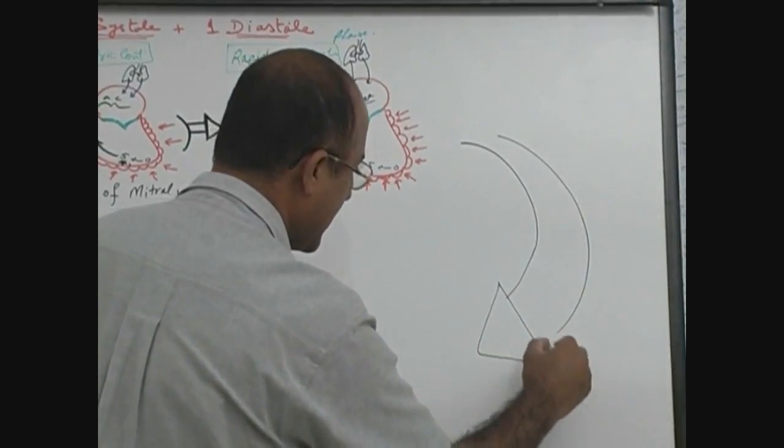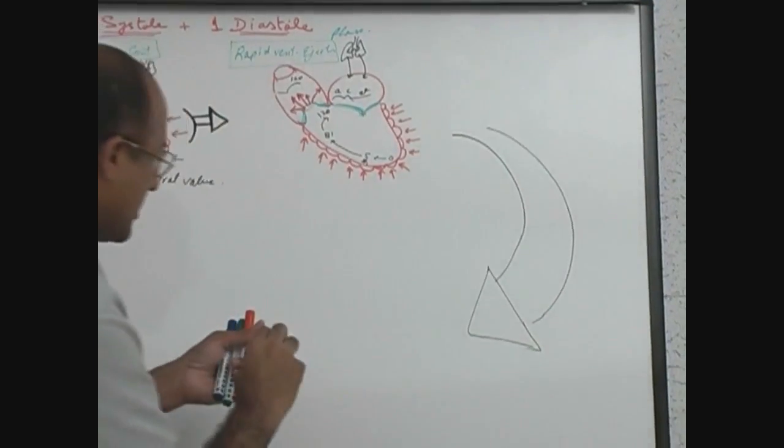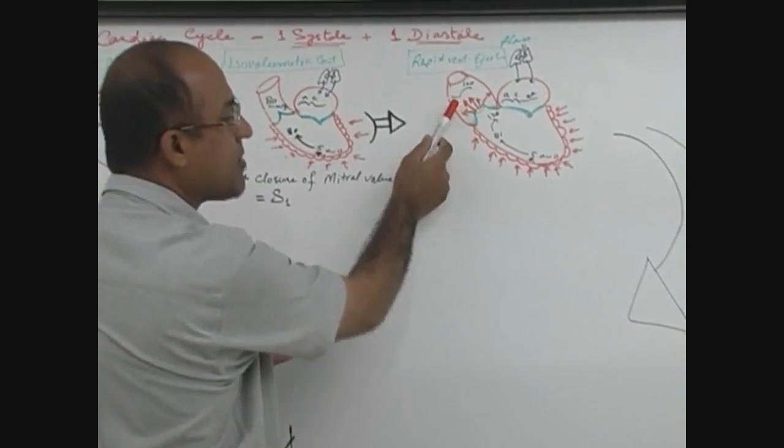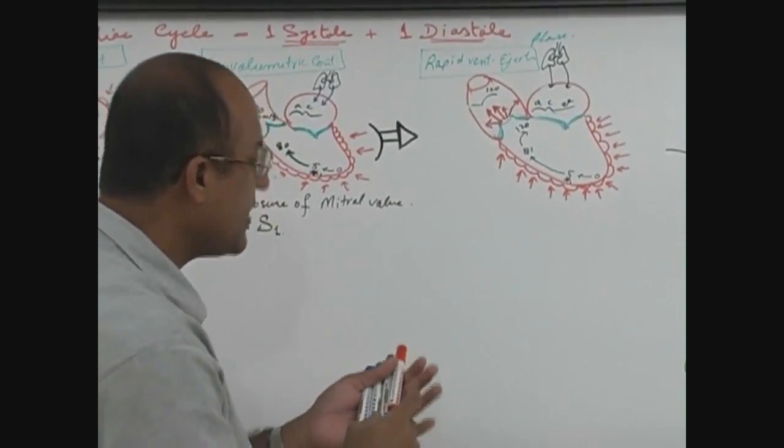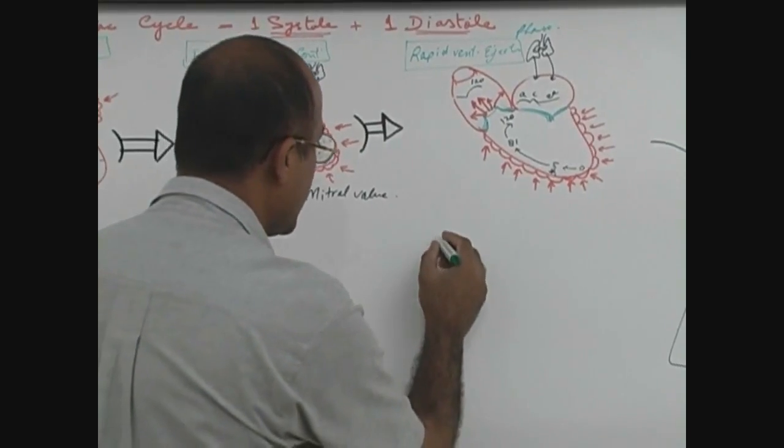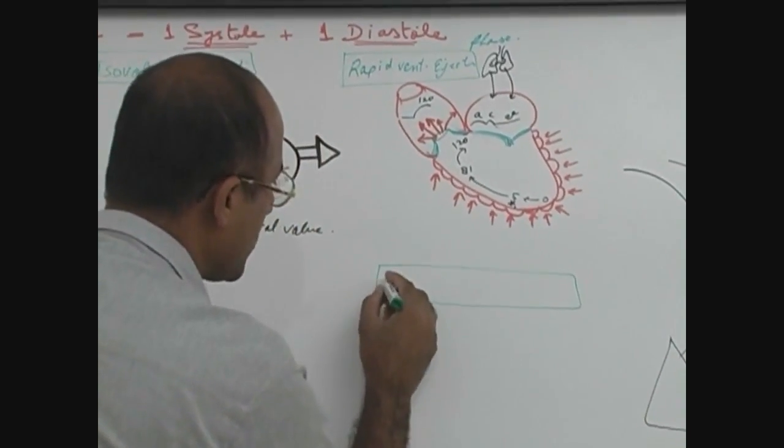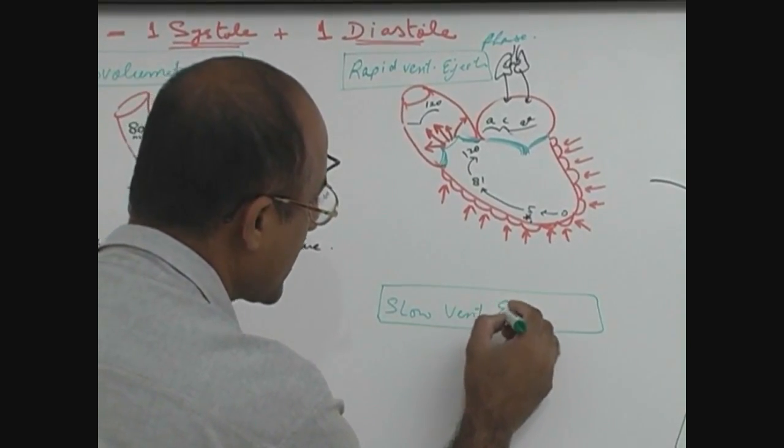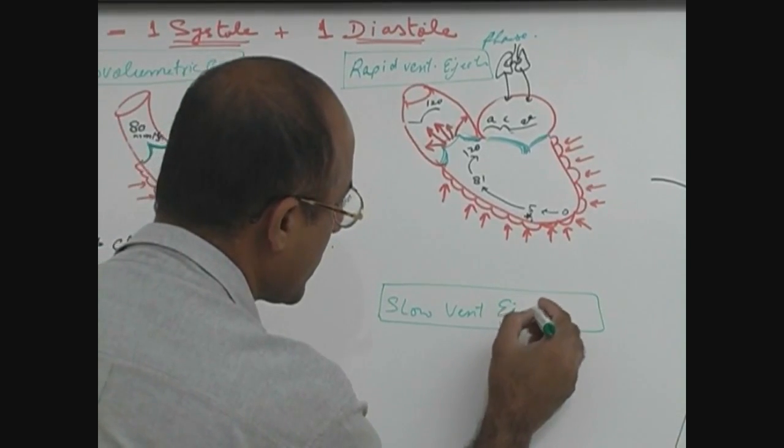But before it starts relaxing, it goes to the next phase. During the next phase, the speed of ejection of blood becomes less. That is why next phase is called slow ventricular ejection phase.